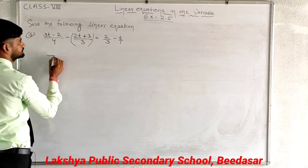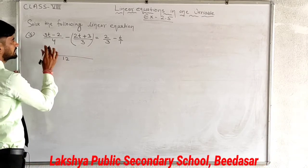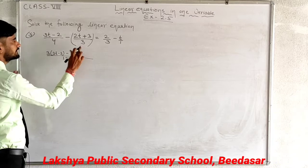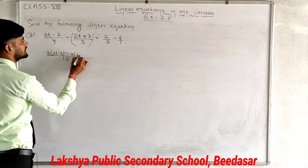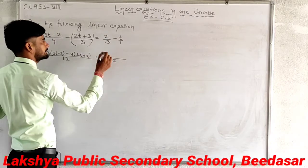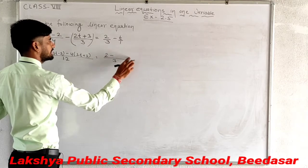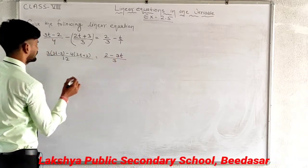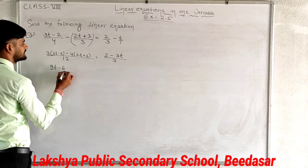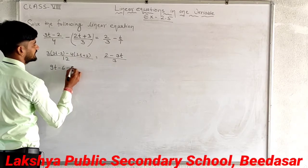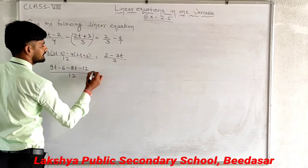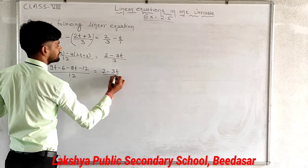Now take the LCM of 4 and 3, which is 12. So 12 divided by 4 is 3, giving 3 times (3t minus 2); minus 12 divided by 3 is 4, giving 4 times (2t plus 3) — kept in brackets. On the right, LCM is 3: 3 divided by 3 is 1, multiply 2 gives 2; minus 3 divided by 1 is 3, multiply t gives 3t. Expanding: 9t minus 6 minus 8t minus 12, upon 12, equals 2 minus 3t upon 3.